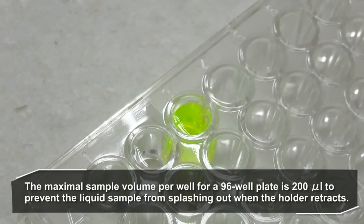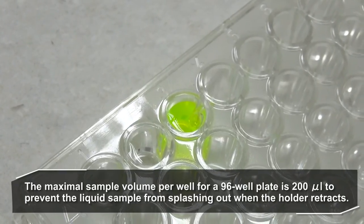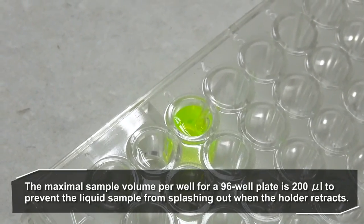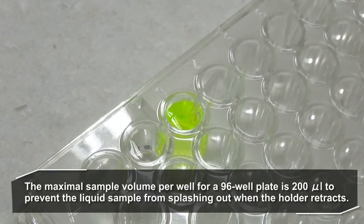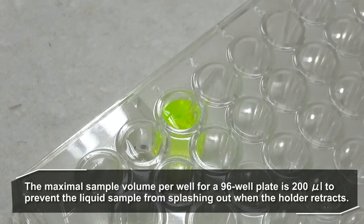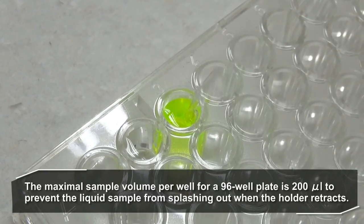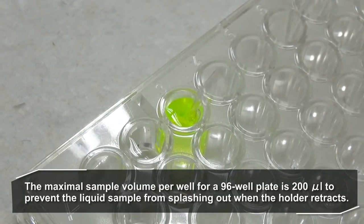The maximal sample volume per well for a 96 well plate is 200 microliter to prevent the liquid sample from splashing out when the holder retracts and from damaging the internal part of the spectrophotometer. If the liquid does splash out, clean up immediately.